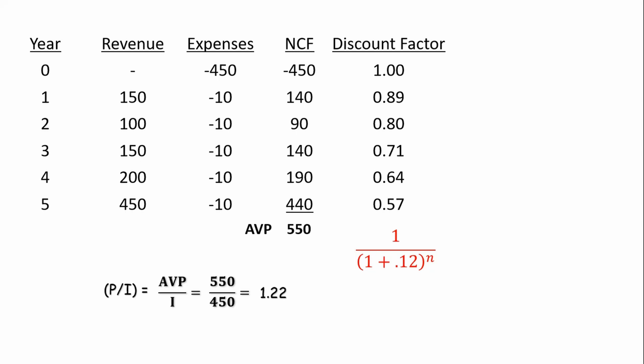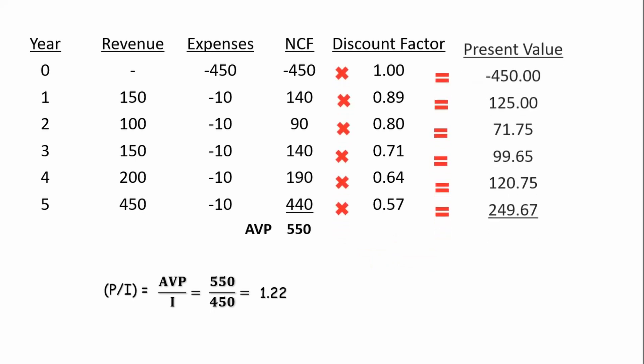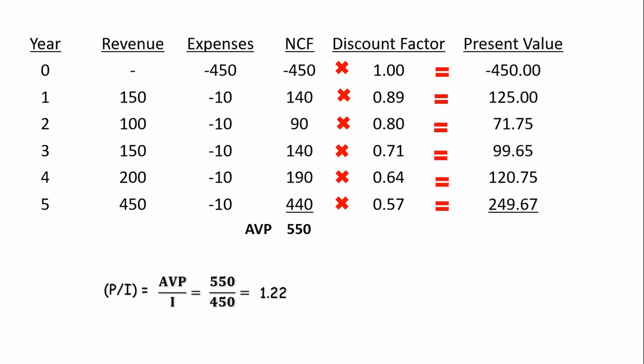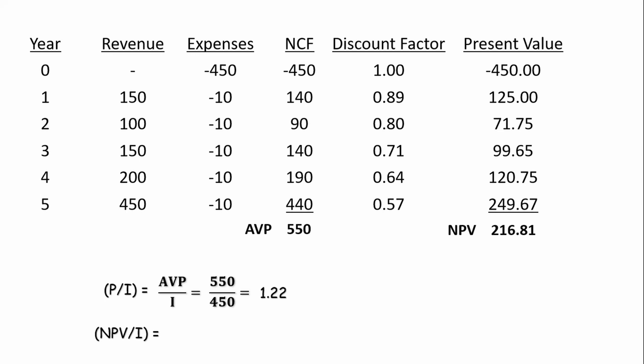To calculate the discounted profit to investment ratio, calculate a discount factor using our standard formula. Assuming an interest rate of 12%, multiply each net cash flow by the discount factor to get a present value for each year, then sum those to get net present value. The discounted P/I ratio is NPV over initial investment — in this case 0.48. When using NPV, as long as it's greater than zero, that's a good thing.